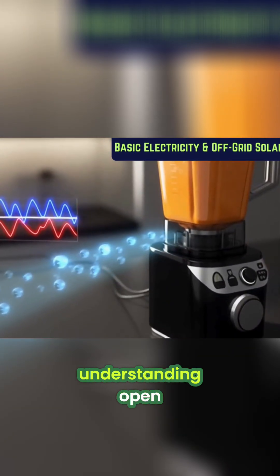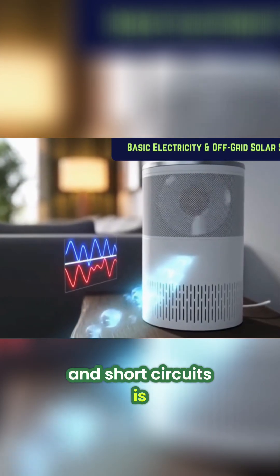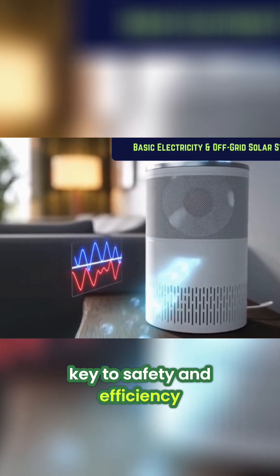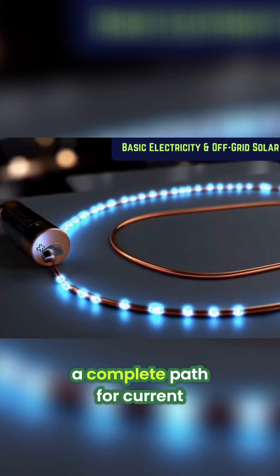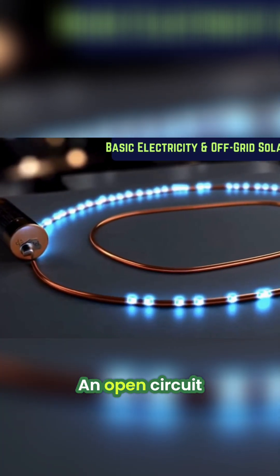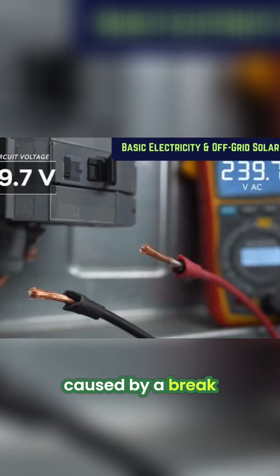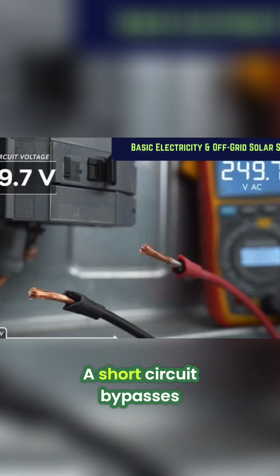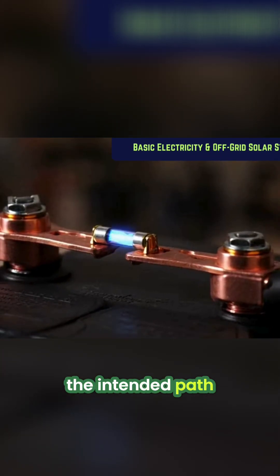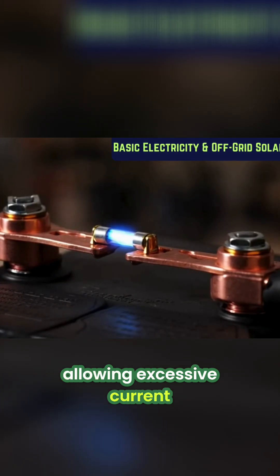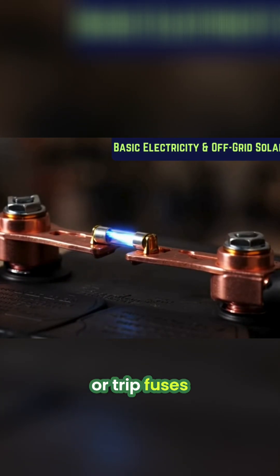Finally, understanding open, closed, and short circuits is key to safety and efficiency. A closed circuit provides a complete path for current. An open circuit, caused by a break, stops current flow. A short circuit bypasses the intended path, allowing excessive current, which can overheat wires or trip fuses.